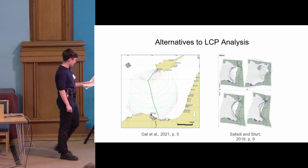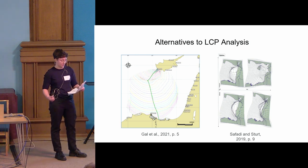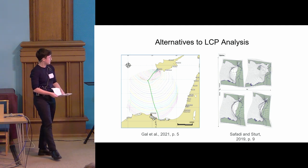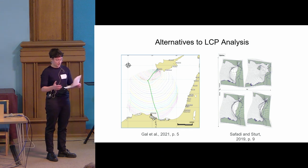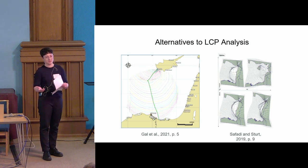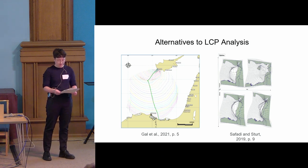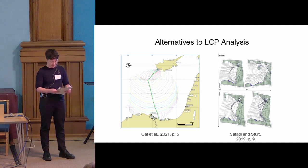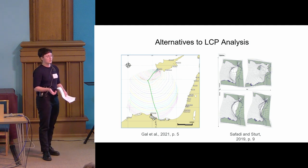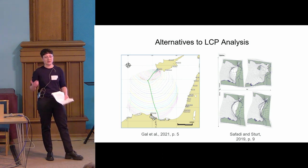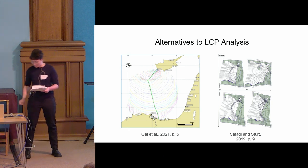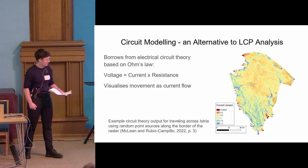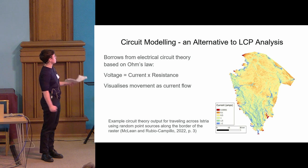In response to these limitations, a number of alternative methods have been proposed. Sapadi and Sturt at Southampton create cartograms to distort physical space in terms of estimated sailing time. David Gall has also done incredible work targeting the use of low-resolution averaged wind data by running hundreds of sailing simulations to get high-resolution least cost paths. Most relevant to my research is the work of McLean and Rubio Campio, who use circuit modeling to model sailing over the Roman Adriatic.